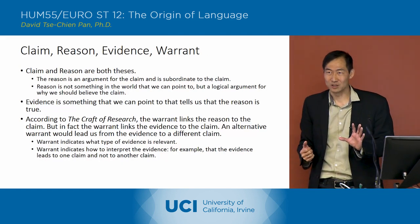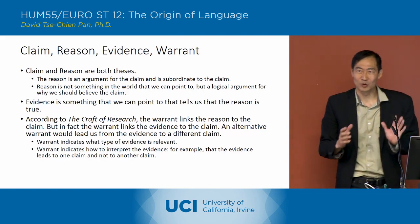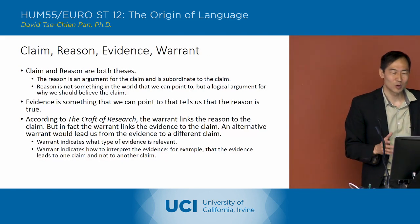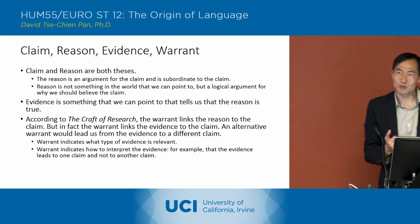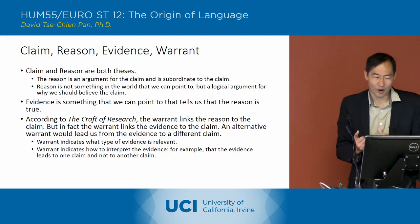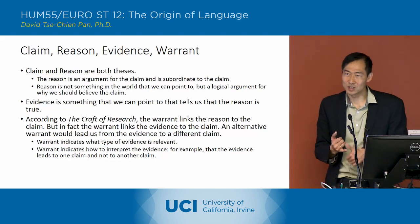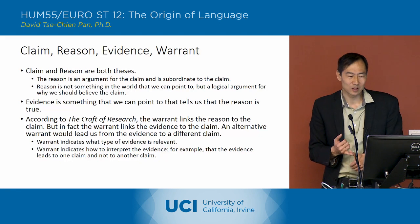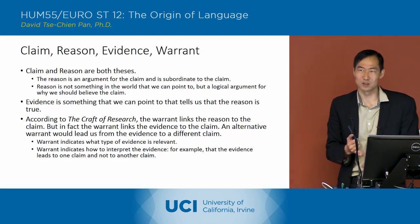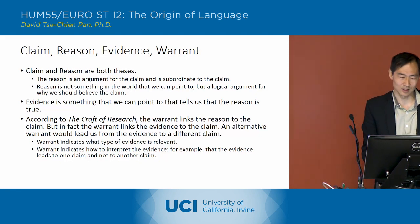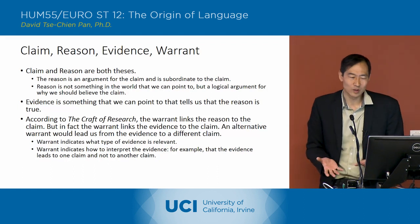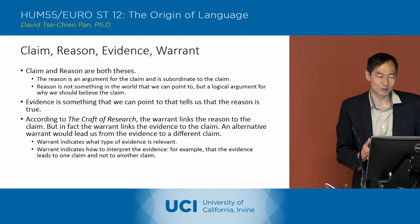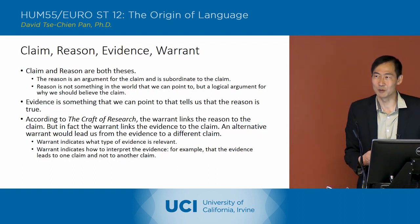Just a little summary of what we went over. Claim and reason are both theses. The reason is an argument for the claim — it's subordinate to the claim, but it's also a thesis. The reason is not something in the world that we point to, but a logical argument for why we should believe the claim.